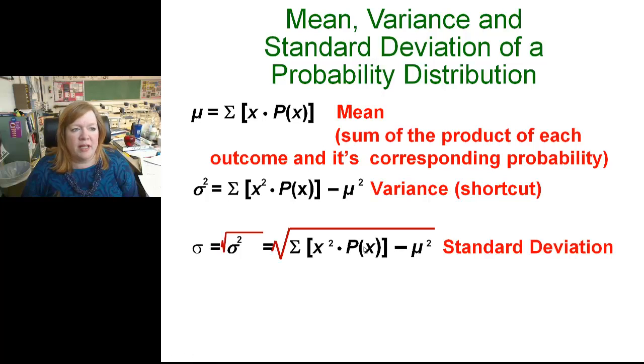And the third formula is standard deviation, where you just take the square root of the variance. Now variance and standard deviation, what that helps us determine is how spread out our data is and how variable our data are, if there are a lot of extremes with our data.